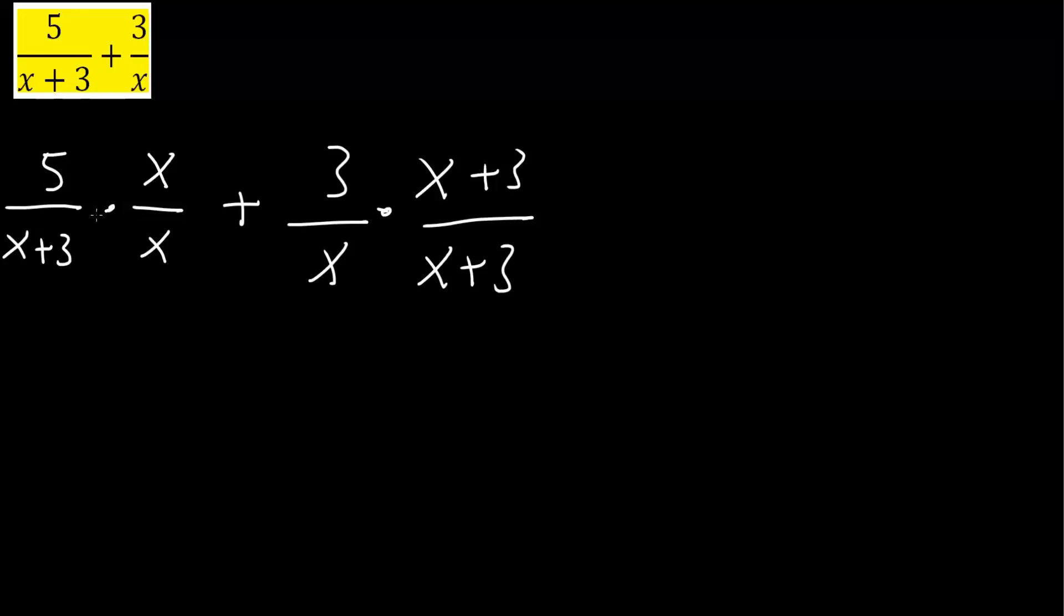Now we need to multiply these terms. So we would get 5 times x is 5x divided by x times x plus 3. So x parenthesis x plus 3. And we do the same for this one. So plus 3 times x plus 3 divided by x times x plus 3.